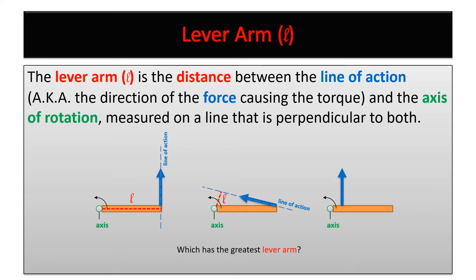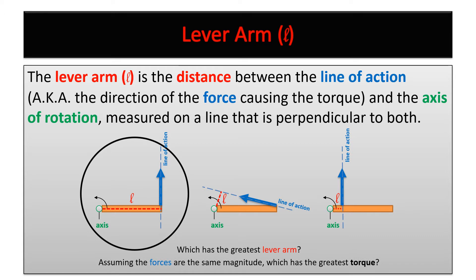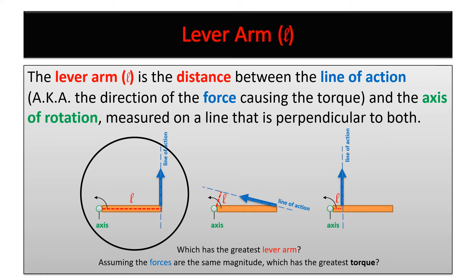In the last example, the line of action is here, and the lever arm is right there at a 90-degree angle. Which of these has the greatest lever arm? This first line here is the largest. Assuming all forces are the same magnitude, which has the greatest torque? It's the same one — the largest lever arm gives the most torque.